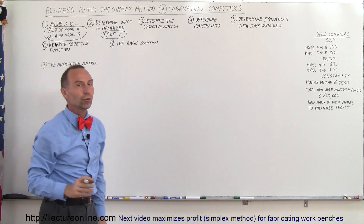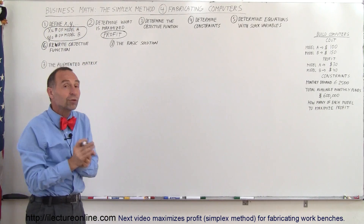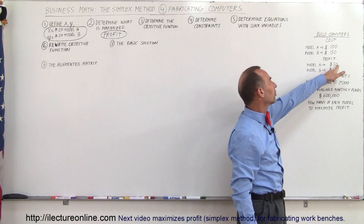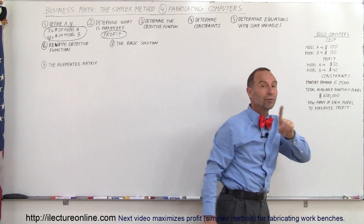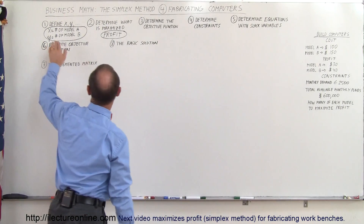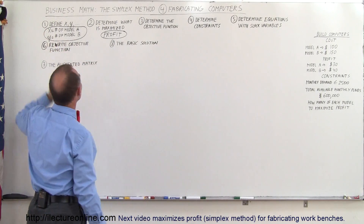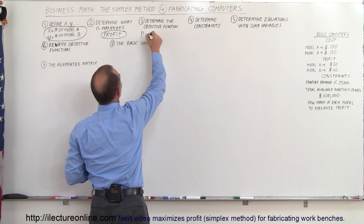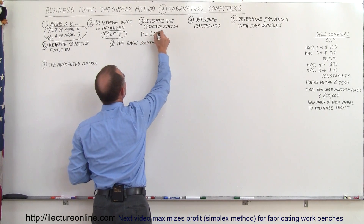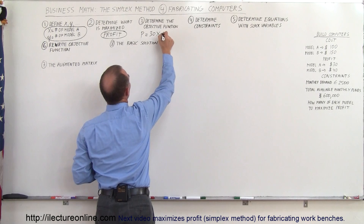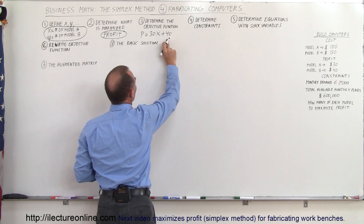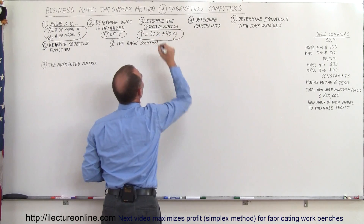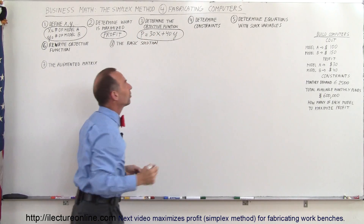Next we determine the objective function — the function that defines the profit. For each Model A we make $30, and for each Model B we make $40. X and Y represent the number of each model we'll manufacture. Therefore the profit P equals 30X plus 40Y. That's our objective function.